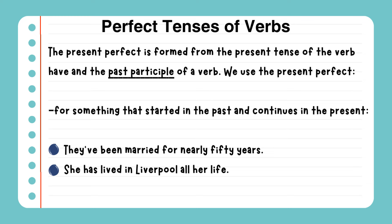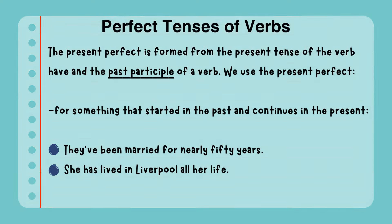The present perfect is formed from the present tense of the verb have and the past participle of a verb. We use the present perfect for something that started in the past and continues in the present. Example: They have been married for nearly 50 years. She has lived in Liverpool all her life.